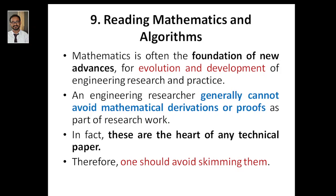Why mathematics and algorithms? Because nowadays we know that engineering is essentially the application of mathematics. What is the difference between science, engineering, or technology? Science is theoretical knowledge — what you know scientifically — whereas technology or engineering is the application of scientific knowledge in order to build practical applications or to solve particular practical problems.